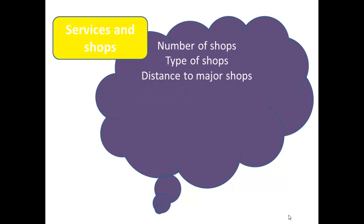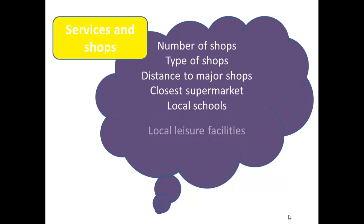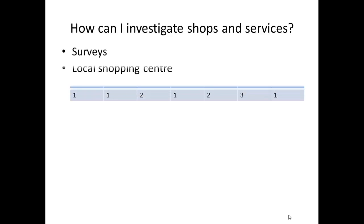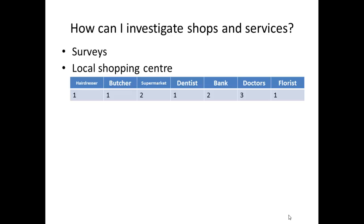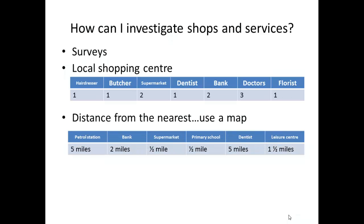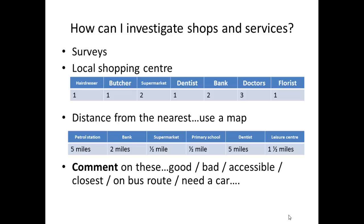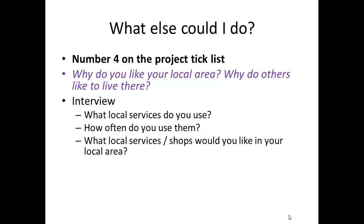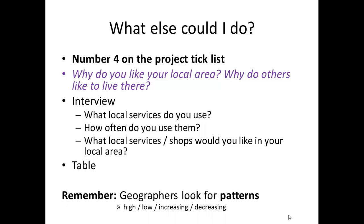Here is what services and shops are and how geographers look at them. You could do a survey by visiting your local shopping area to discover what types of shops there are and making a tally chart of what you find. Or you could use a map to measure the distance to your nearest service. You could display all findings on a map, but remember to comment on them. Challenge seekers could interview local friends and family about their local services — this is important for section 4 on the tick list. Ask three or four questions and display results in a table or graph.